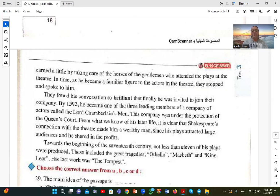From what we know of his later life, it is clear that Shakespeare's connection with the theater made him a wealthy man, since his plays attracted large audiences and he shared in the profits. Towards the beginning of the 17th century, not less than 11 of his plays were produced. These included the great tragedies: Othello, Macbeth, and King Lear. His last work was The Tempest.